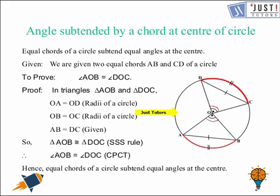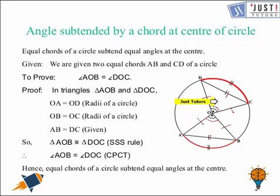OA equals OD and OB equals OC — both pairs are radii. We are also given that AB equals CD. So by SSS (side-side-side rule), triangle AOB is congruent to triangle COD. By CPCT (corresponding parts of congruent triangles), we can prove that angle AOB equals angle COD. Hence we have proved that equal chords of a circle subtend equal angles at the center.